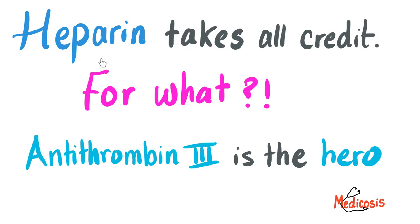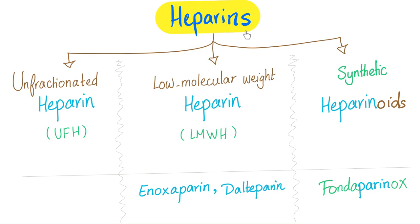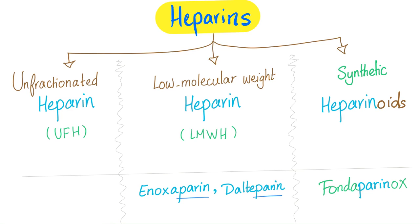We give credit to whom credit is due — antithrombin 3 is the actual hero. Say heparins because heparins is a group of drugs including the unfractionated heparin or UFH, low molecular weight heparin or LMWH, and synthetic heparinoid. There's a difference between heparins and heparin — by the same token, there's a difference between tetracyclines and tetracycline. The unfractionated heparin is just called heparin. Low molecular weight heparin includes enoxaparin and dalteparin. The synthetic heparinoid is fondaparinux.